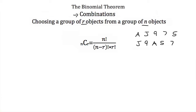Combinations, if you've studied permutations, are just like permutations except the order doesn't matter. Now if we wanted to calculate how many different combinations of r objects out of n objects, we use this formula: n choose r is equal to n factorial divided by n minus r factorial times r factorial.